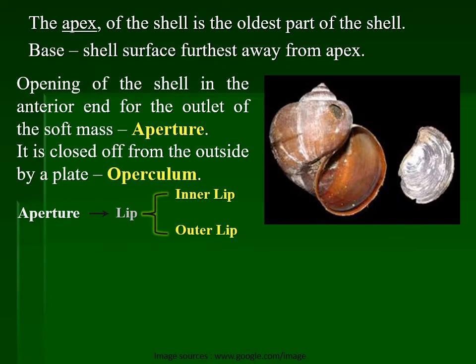Coming to the morphology of gastropods: the first-formed, oldest portion of the shell — the tip — is known as the apex. This is analogous to what we call the beak in bivalves — the pointed portion. In gastropods, this pointed oldest part of the shell is known as the apex.